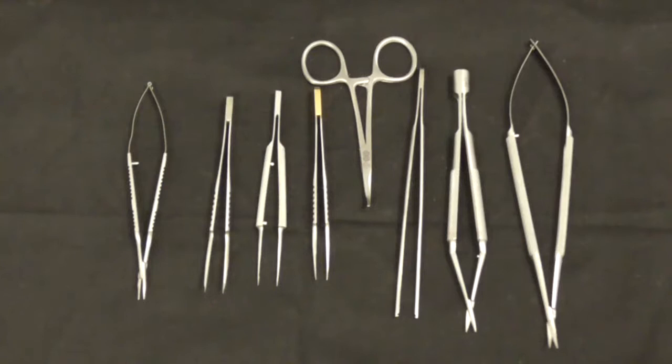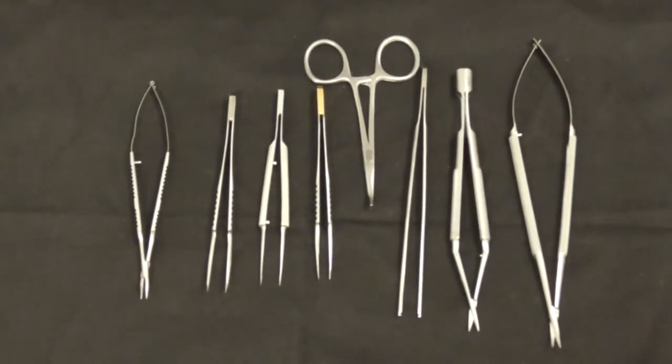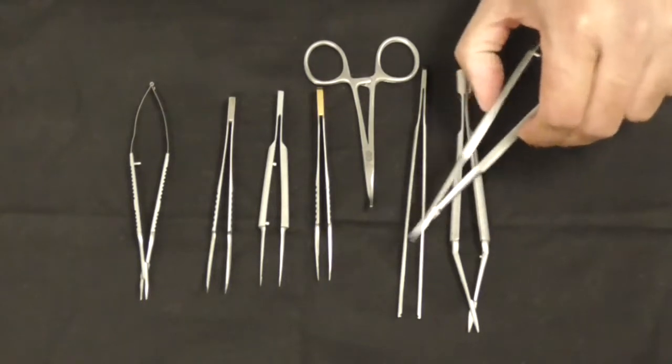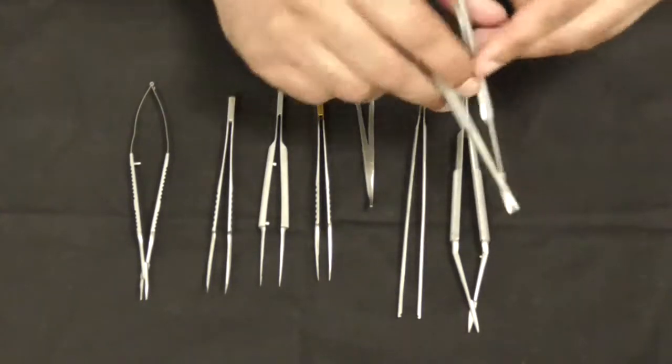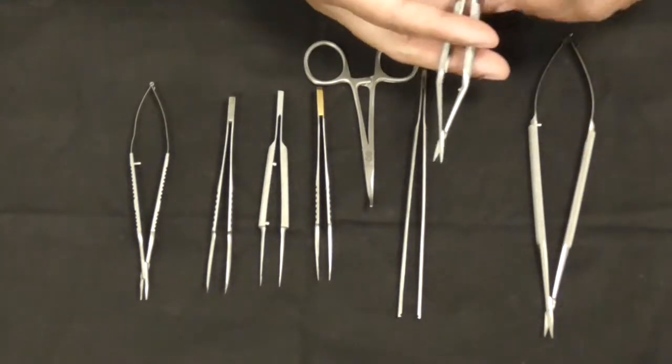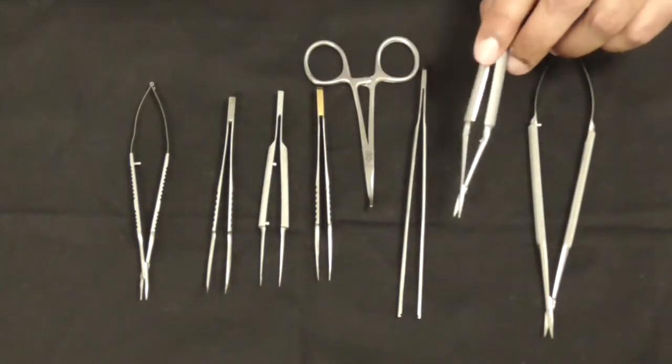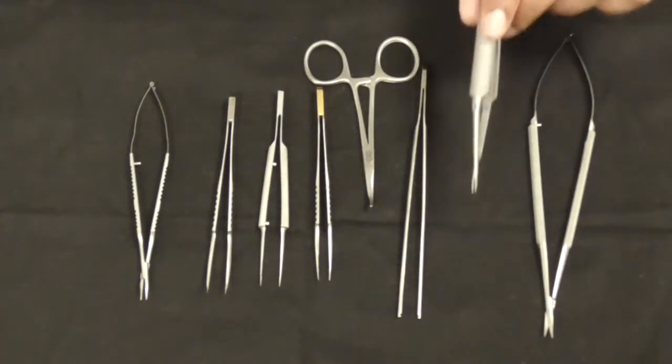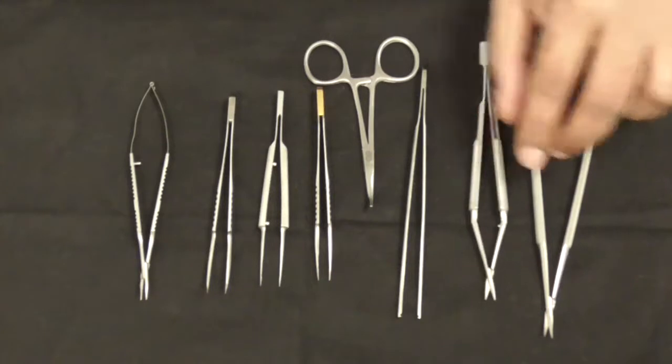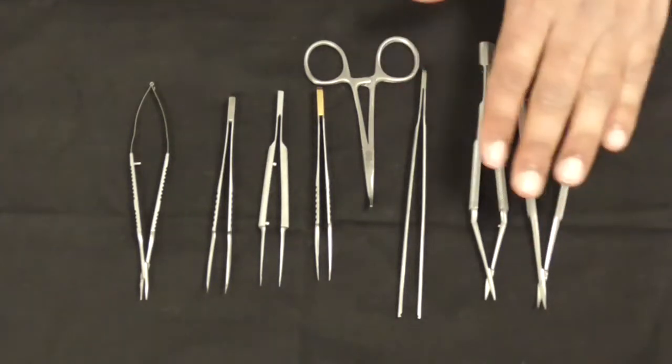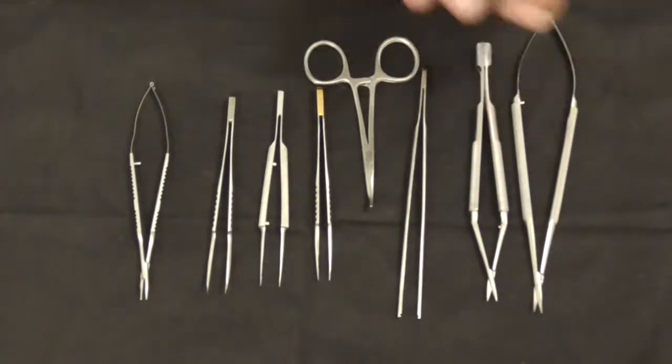We've got the curved scissors, which are used for tissue dissection. The straight scissors are used mainly for suture cutting or cutting the vessel themselves. You get a nice straight cut. The curved scissors are more used for getting rid of adventitia, but there are two kinds of scissors and you've got to use them in the appropriate manner.